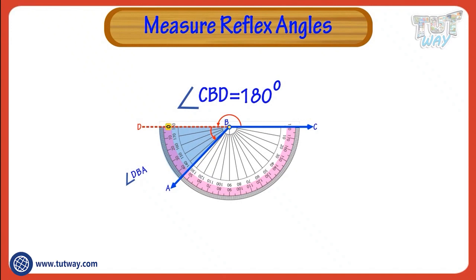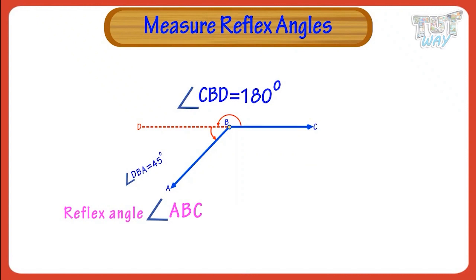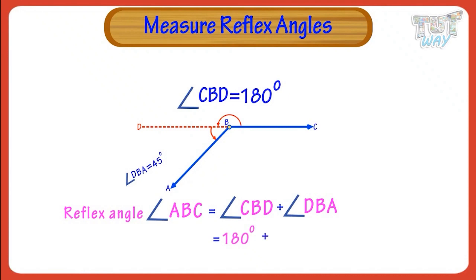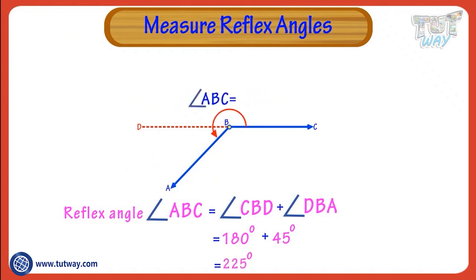We will use the outer scale to measure angle DBA, as the arm DB passes through the zero of the outer scale. Following the outer scale around the protractor, we find that the other arm BA passes through the outer scale at 45 degrees. So the size of angle DBA is 45 degrees. To measure the reflex angle ABC, since the reflex angle ABC equals the sum of angle CBD and angle DBA — 180 degrees plus 45 degrees — we get 225 degrees.